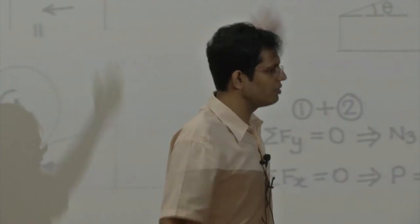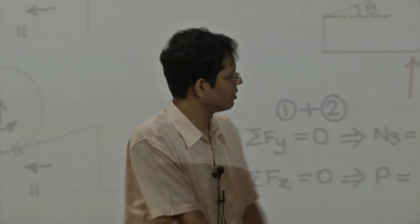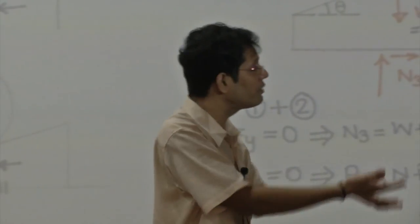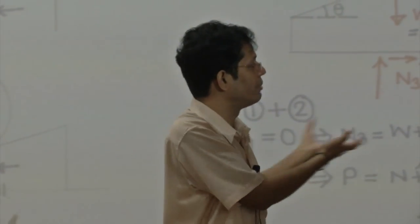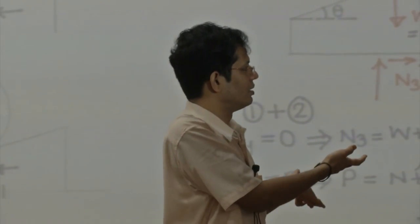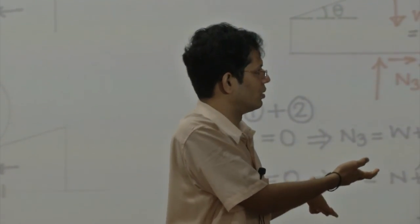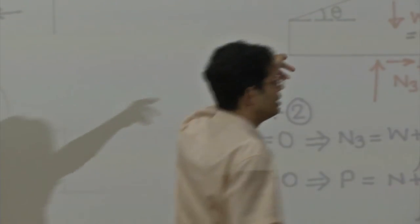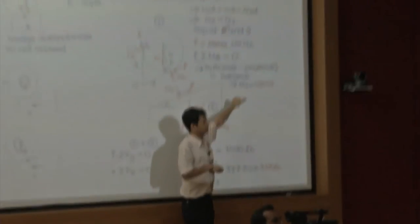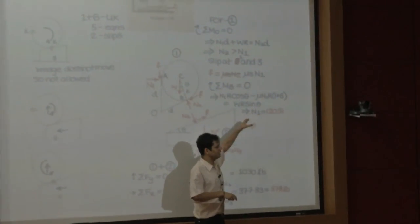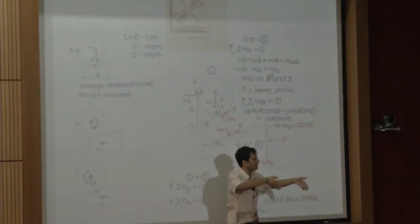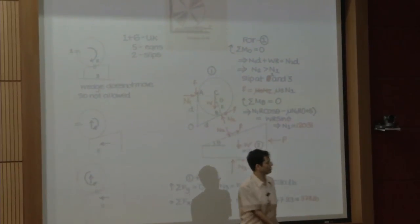We cannot find out all the forces for any arbitrary P because the number of equations is less than the number of unknowns. So we use impending slippage only to tell at what force the system becomes unstable. If the force is lesser, it will be stable. You can always ask: if P is in the other direction, at some P it will start slipping in that direction. But in between, it will be stable.